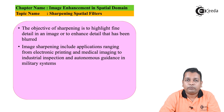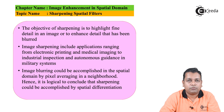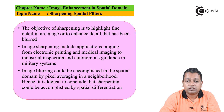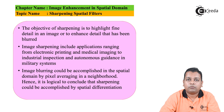Image blurring can be accomplished in the spatial domain by pixel averaging in the neighborhood dimension, as seen in the previous topic. Hence, it is logical to conclude that sharpening can be accomplished by spatial differentiation. These points are essential to distinguish the smoothening spatial filter from the sharpening spatial filter. For smoothening, we did pixel averaging over the neighborhood; for sharpening, the logical operation is spatial differentiation to highlight fine details in the image.